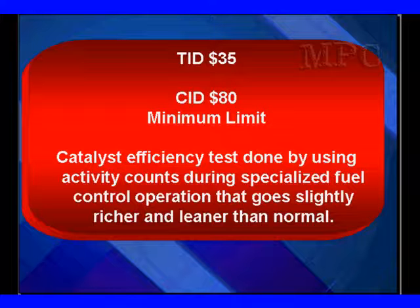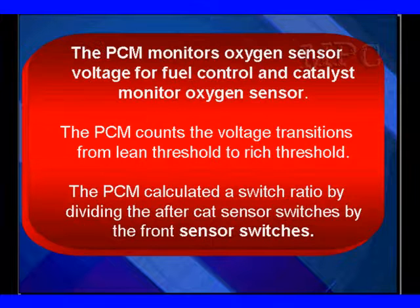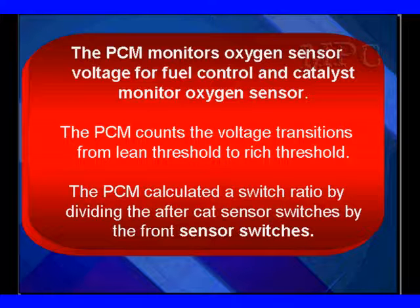We've got to look at both fuel control and after catalyst signals. We don't have a way to do this other than with a lab scope. The PCM monitors oxygen sensor voltage for fuel control and the catalyst, counts the voltage transitions from lean to rich, and calculates a switch ratio by dividing the after-cat switches by the front cat switches.